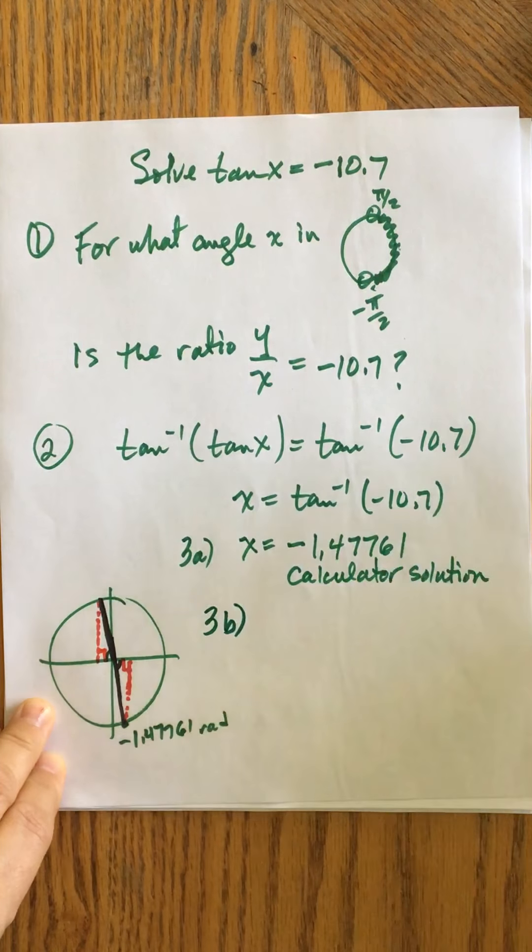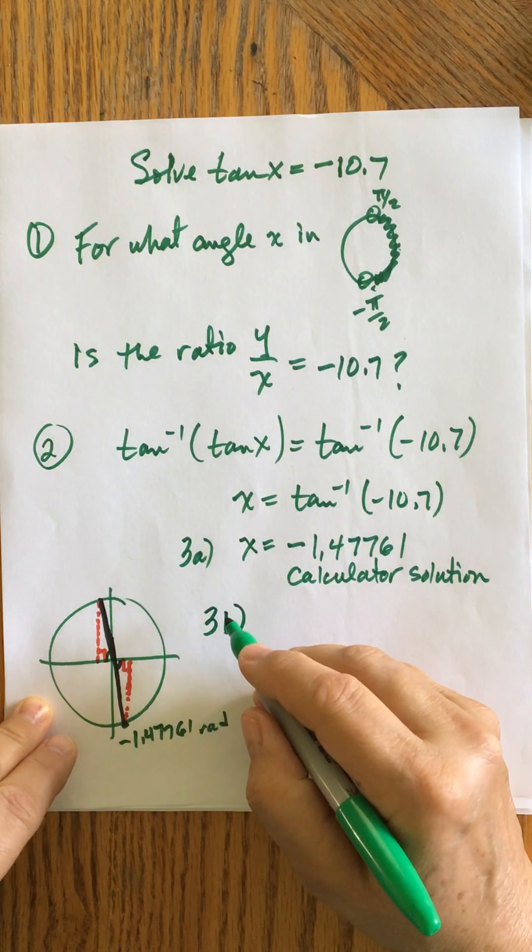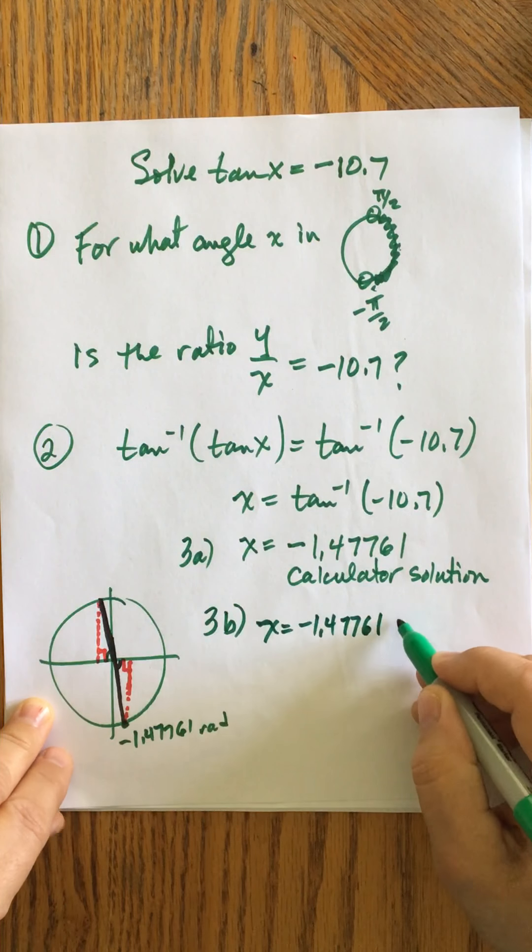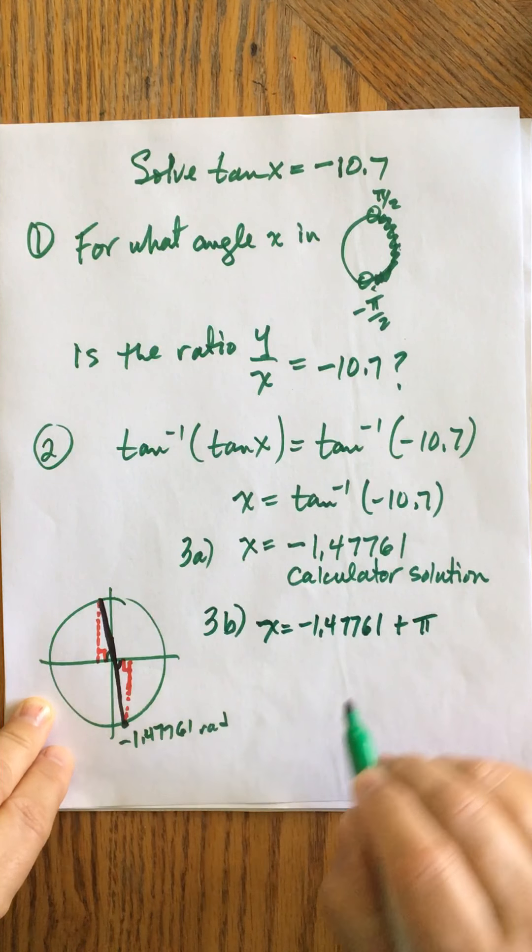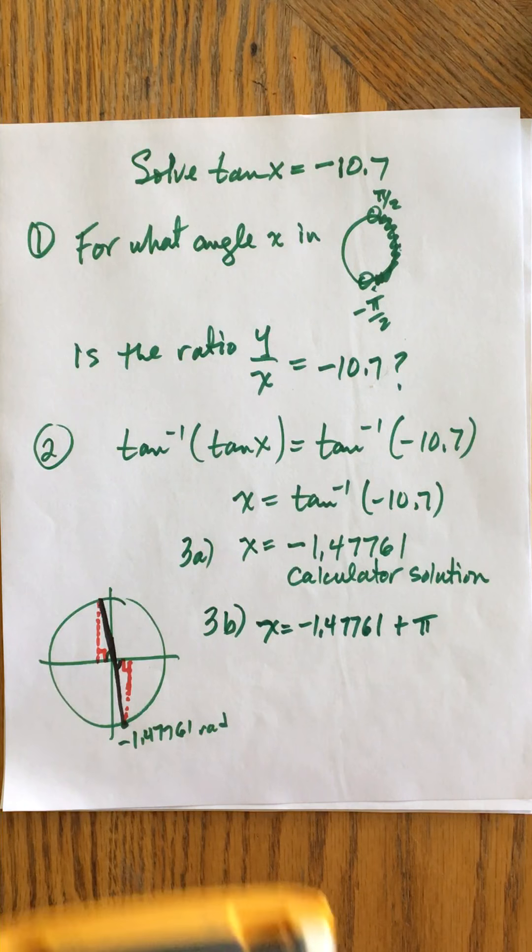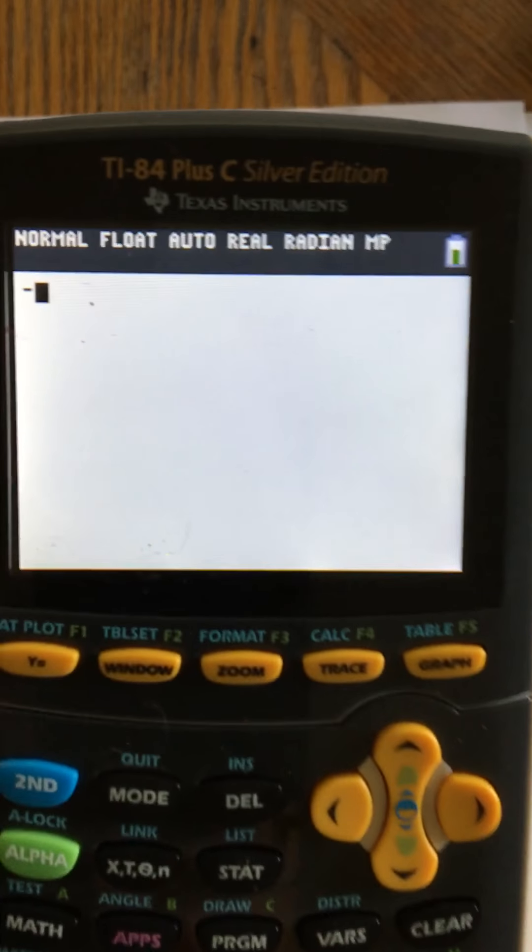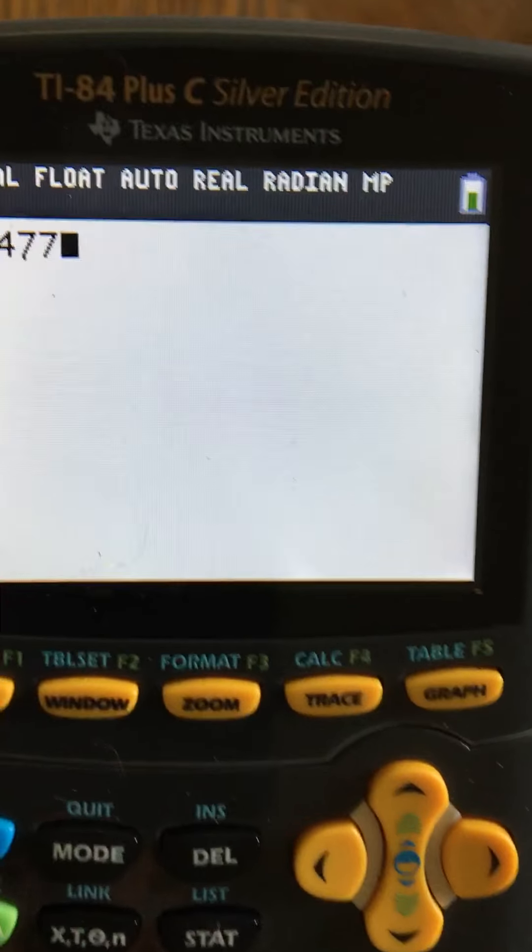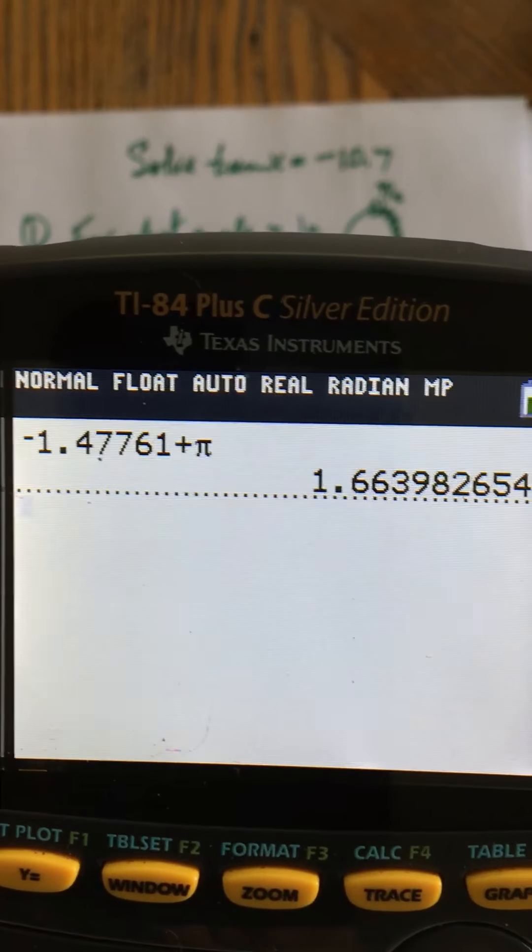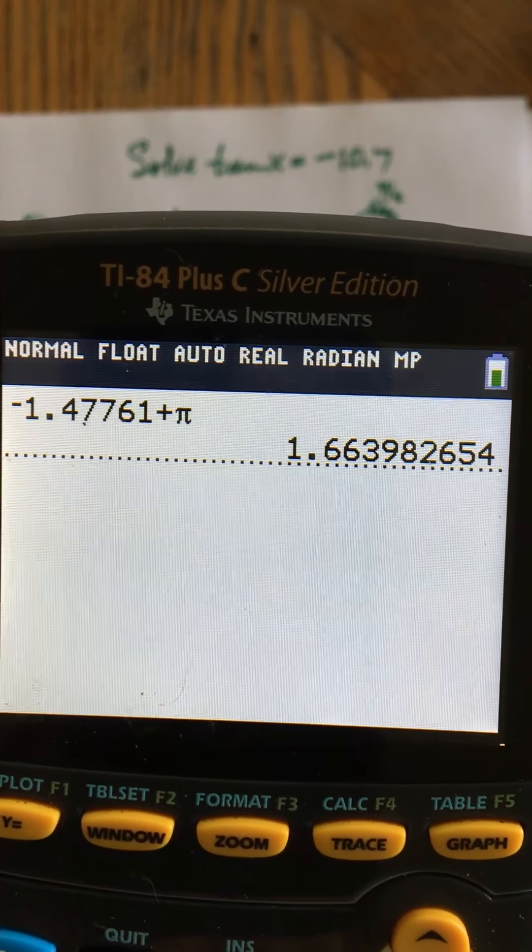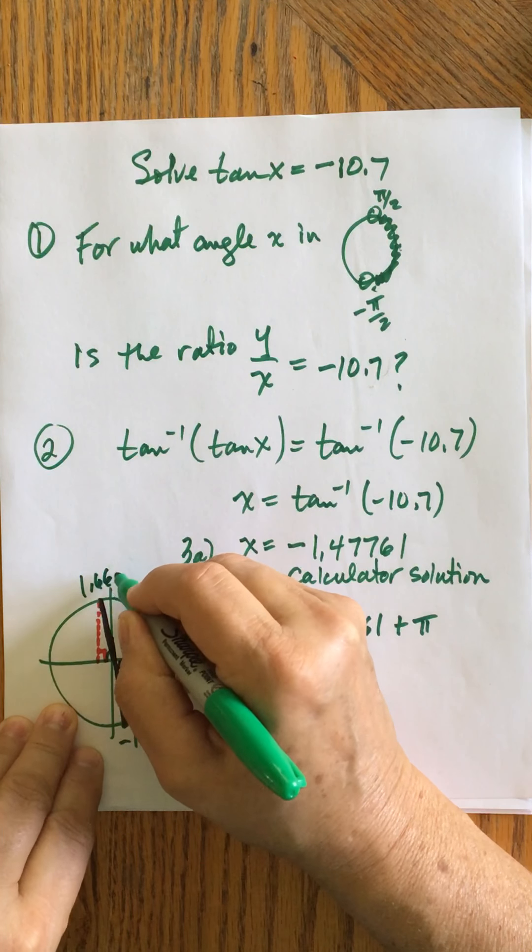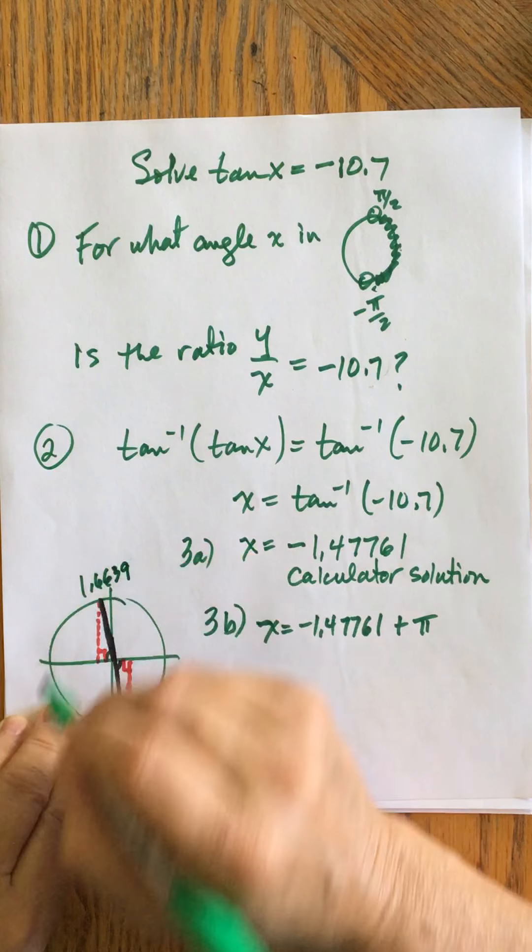So I know that 3b, I'm basically just going to do x equal negative 1.47761 plus pi. And so let's see, what will that give us? Negative 1.47761 plus, and I'm going to go ahead and invoke the actual pi. And I get 1.66398.